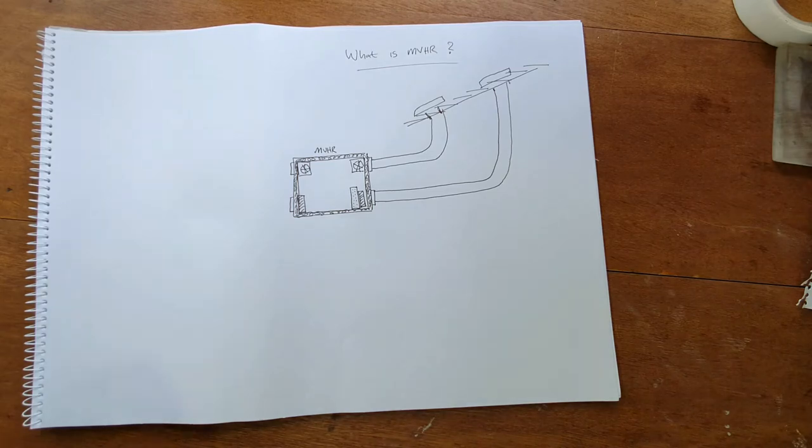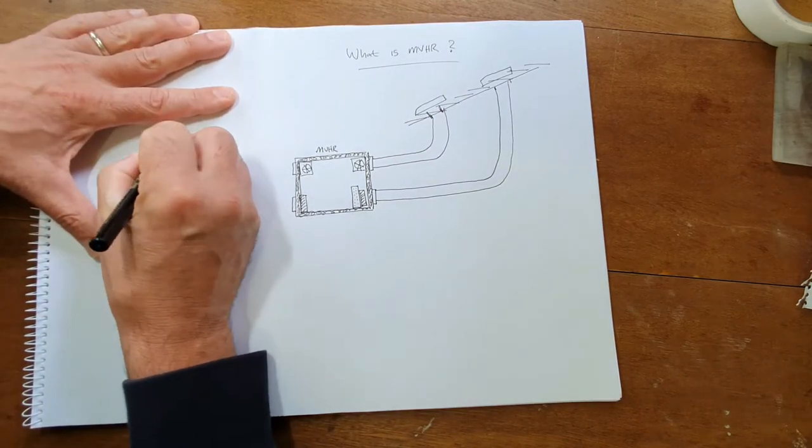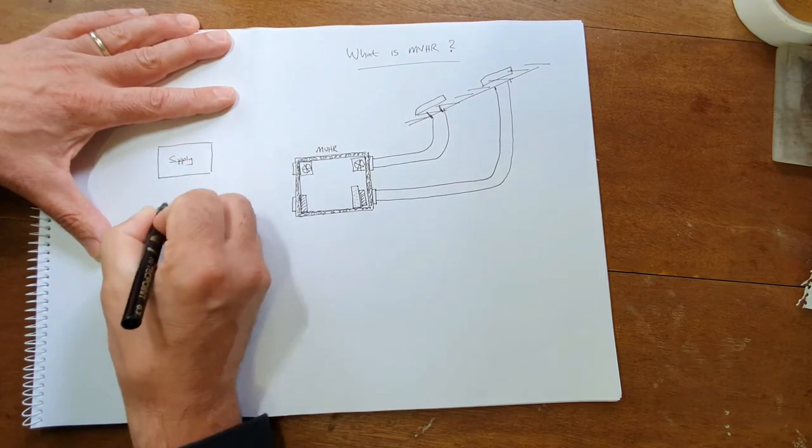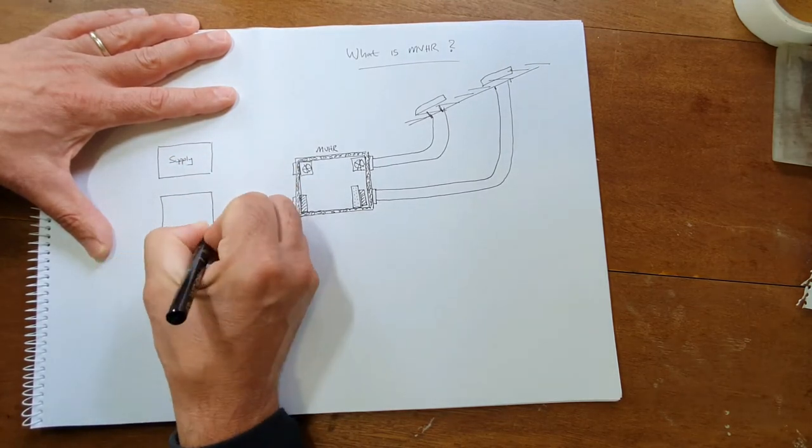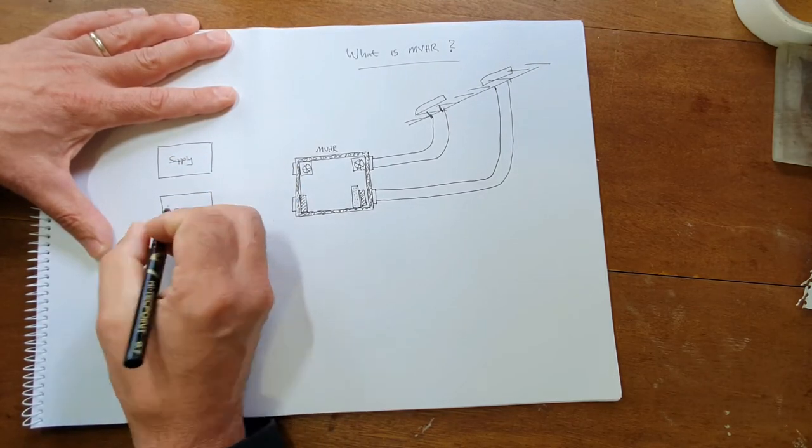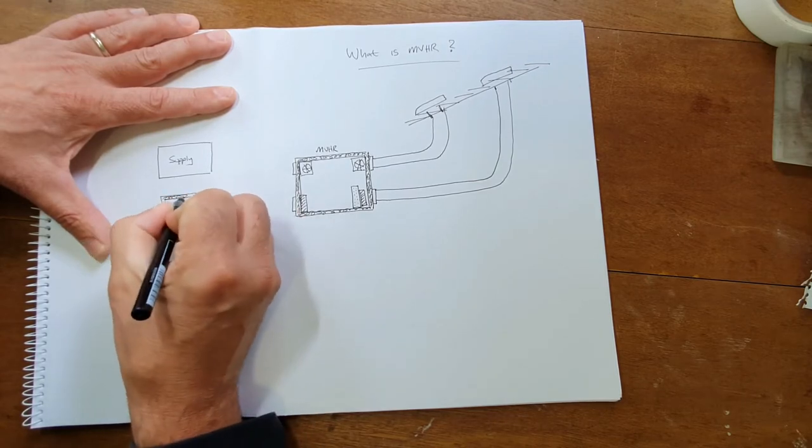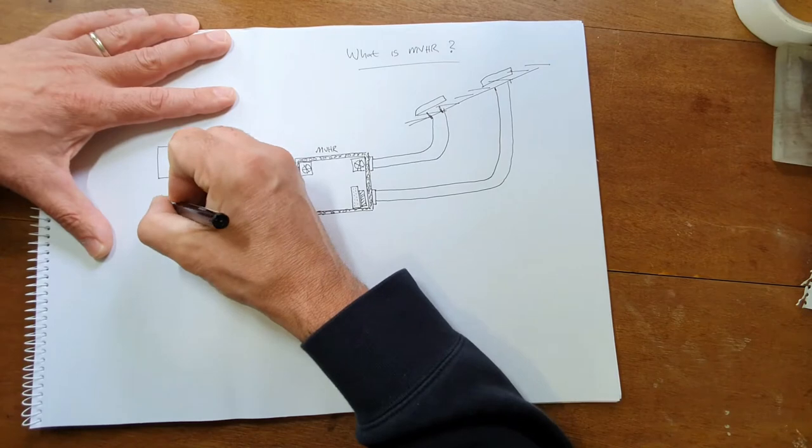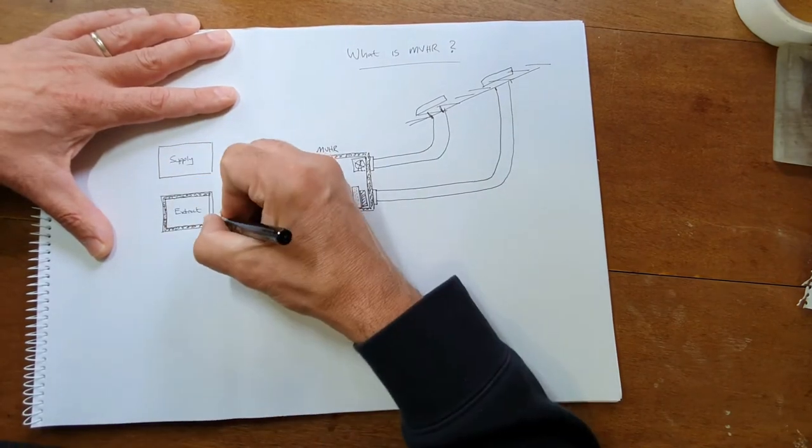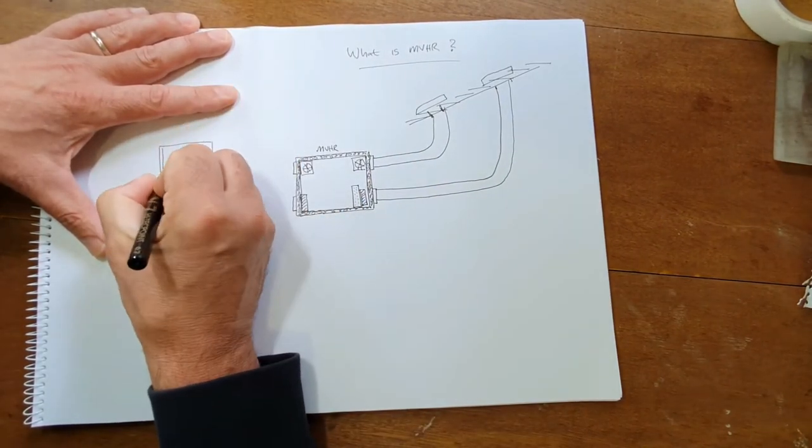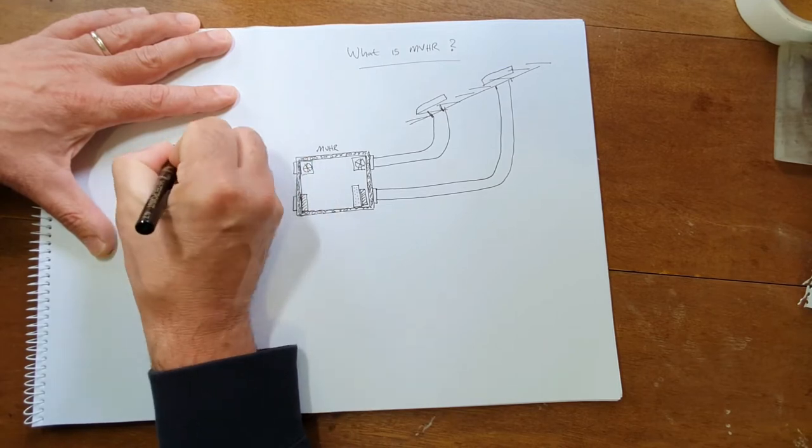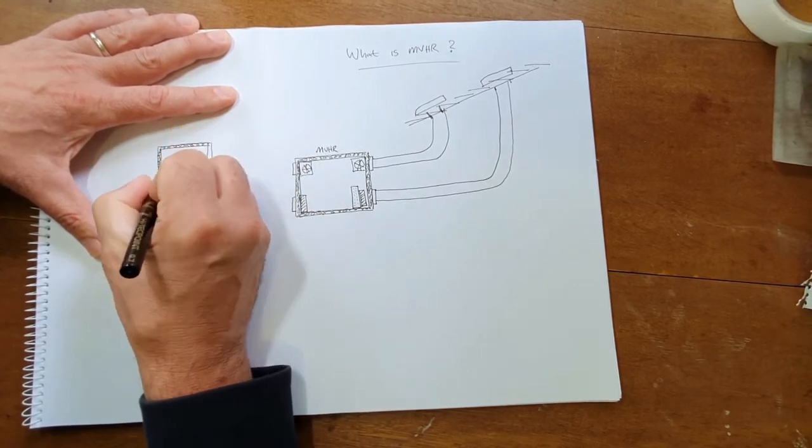And I'm going to draw the manifolds. They help to spread the air around the property as you're feeding it in and also collect the air from the property before you take it out. Call them the supply and extract manifolds. The better ones have got a soundproof lining as well. That's to stop any more noise coming from room to room or more noise coming through the ducting and into your room.